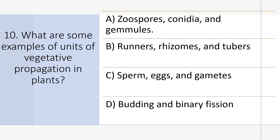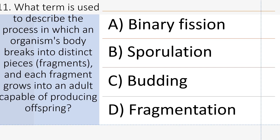What are some examples of units of vegetative propagation in plants? Answer B: Runners, rhizomes, and tubers. What term is used to describe the process in which an organism's body breaks into distinct pieces or fragments, and each fragment grows into an adult? Answer D: Fragmentation.